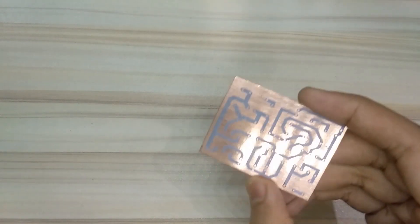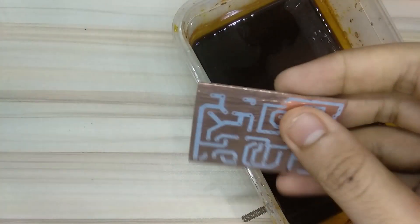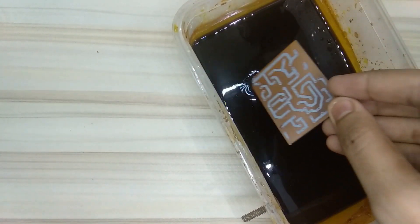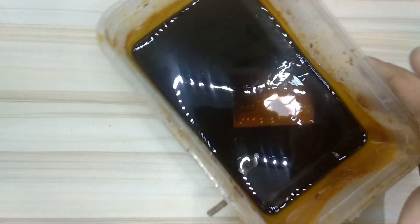So guys, after 5 minutes our bottom layer is printed. So now put this in ferric chloride and then shake it for 20 minutes.